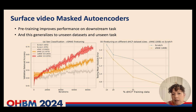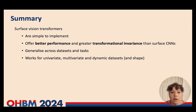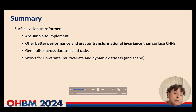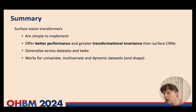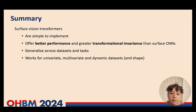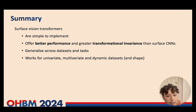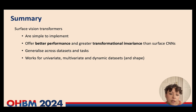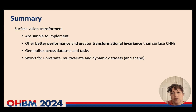We've made these pre-trained networks available on our GitHub. In conclusion, from my experience I would recommend using surface vision transformers over convolutional neural network approaches because they're simple and intuitive to implement, they offer better performance and greater transformation invariance than surface CNNs, we can generalise across data sets and tasks, we can offer pre-trained networks so you can apply them to much smaller data sets, and they seem to be working really well for univariate, multivariate, and dynamic data sets — and we're now generalising them to shape.